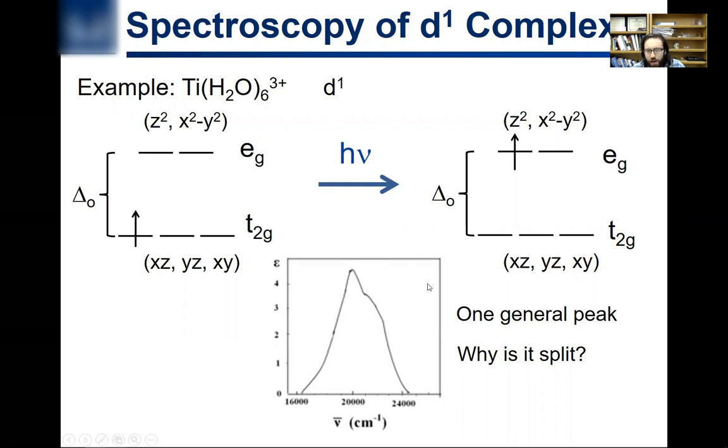It is split. Why is it split? That has to do with Jahn-Teller distortion. Remember that d1 complexes can undergo a weak Jahn-Teller distortion, and so really you have two energy levels here, and so that's giving rise to two peaks.